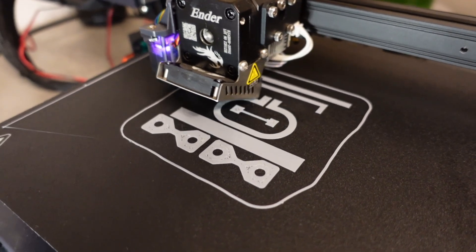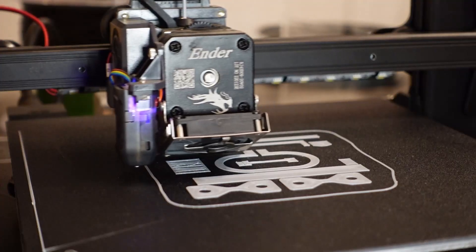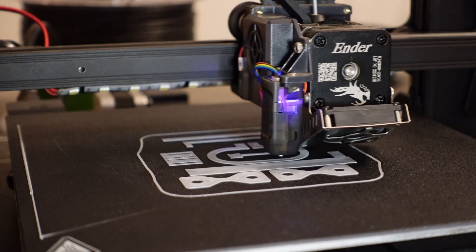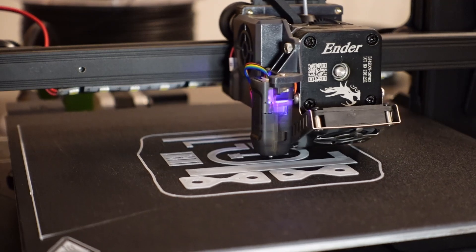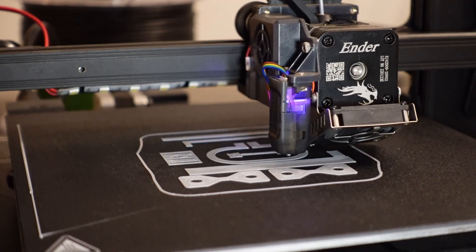That's the first layer. I'm printing all test objects at once using the same g-code. Temperatures: 215 on the nozzle and 60 on the bed, and of course maximal part cooling.